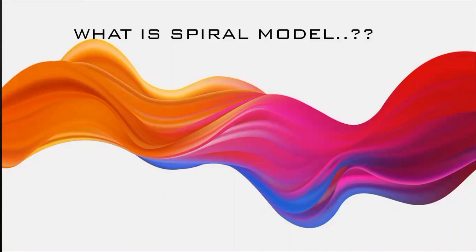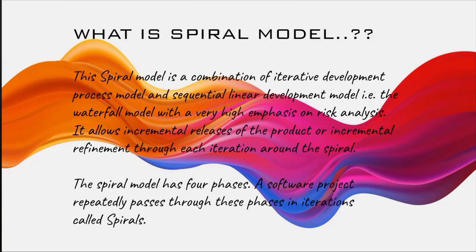I hope you've come across the waterfall model. The spiral model is a step ahead compared to the waterfall model. The spiral model is a combination of the iterative development process model and the sequential linear development model, which is the waterfall model. It is a hybrid model with very high emphasis on risk analysis, allowing incremental reuse and refinement through each iteration.